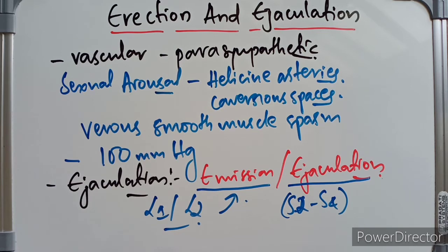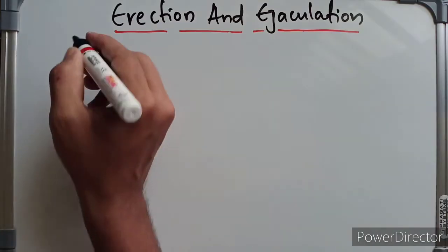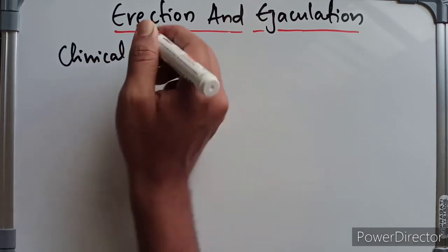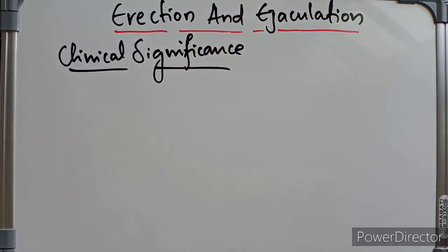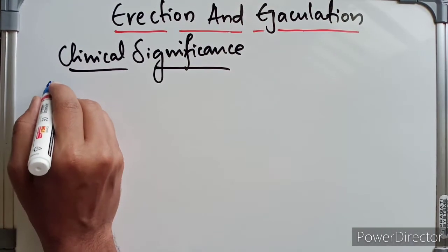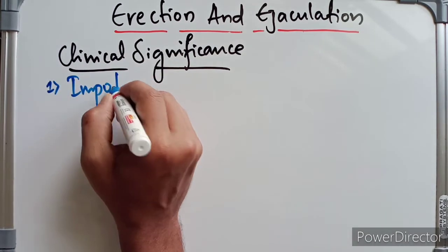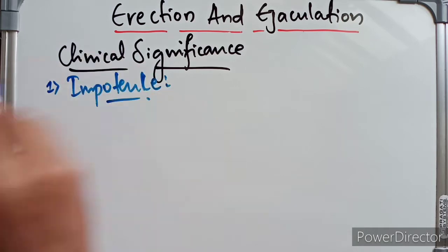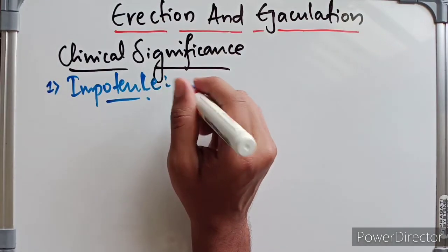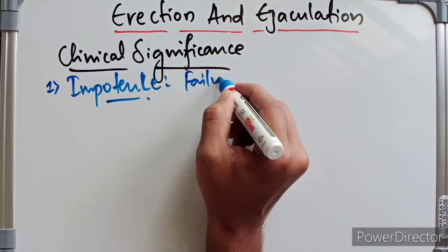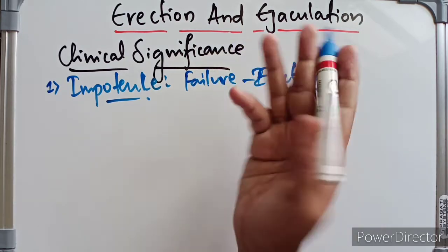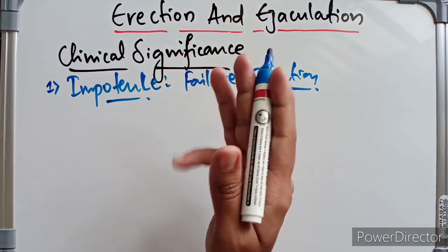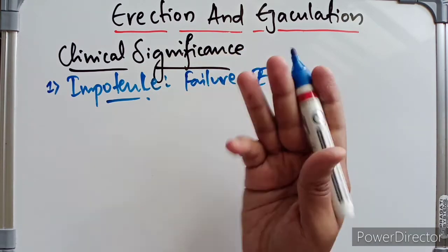Now discussing clinical significance. Failure to achieve erection of the penis is called impotence. The most common causes of erectile dysfunction include psychogenic disturbance with failure to relax the smooth muscle of the corpora, arterial insufficiency due to atheromatous disease, and involvement of the parasympathetic nerves.